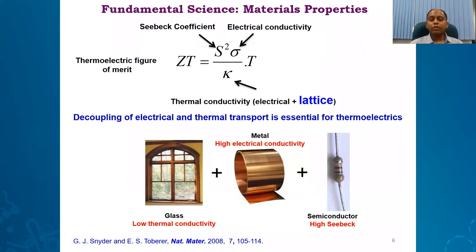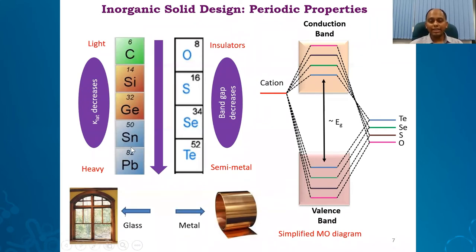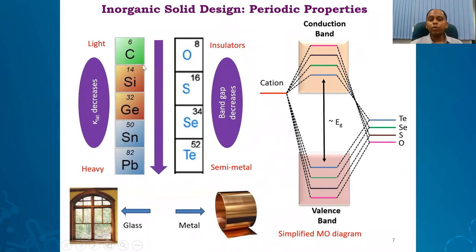As a chemist, we always like to take help from the periodic table. If you go down the periodic table from carbon to lead, or oxygen to tellurium, the mass of the element increases — elements become heavier. If we construct a lattice with heavier elements such as lead telluride or tin telluride, the lattice vibrations that carry heat become slower, giving us almost glass-like thermal conductivity.